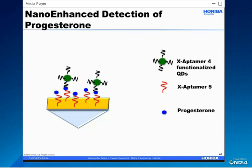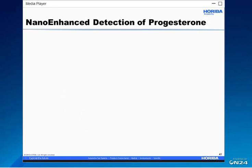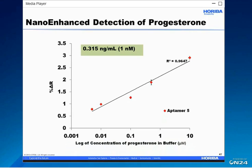With nano enhancement, we identified aptamer 4 as a good detection aptamer and bound it to the quantum dots. We immobilized aptamer 5 as the capture ligand, injected the progesterone, and then enhanced the signal with a sequential injection of the nano enhancers. By using nano enhancers, we were able to achieve a limit of detection of 1 nanomolar, which is equal to 0.315 nanograms per ml. We were very excited with these results.